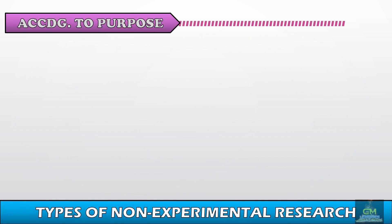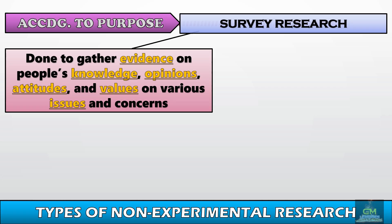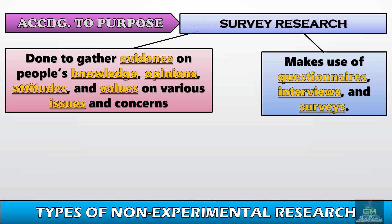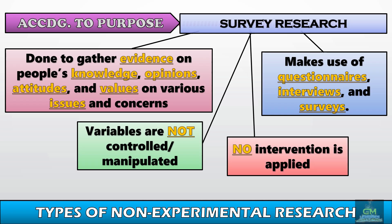Now let's discuss non-experimental research designs according to purpose, starting with survey research. Survey research is done to gather evidence on people's knowledge, opinions, attitudes, and values on various issues and concerns. It makes use of questionnaires, interviews, and surveys. In survey research, variables are not controlled or manipulated and no intervention is applied.